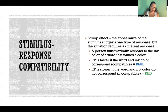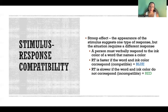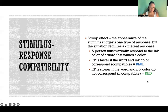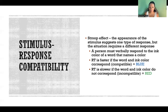The Stroop effect is an example of a stimulus-response compatibility problem, where the appearance of the stimulus suggests one type of response but the situation requires a different one. A person must verbally respond to the ink color of a word that names a color. When the ink color is compatible with the word — like the word 'blue' written in blue — it's faster. But when the word 'red' is written in green, it takes longer because the stimulus and response are not compatible.